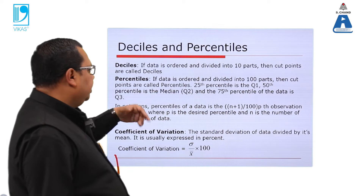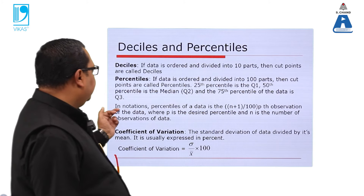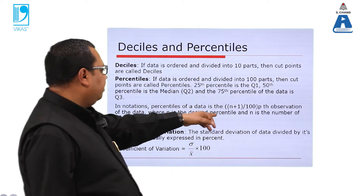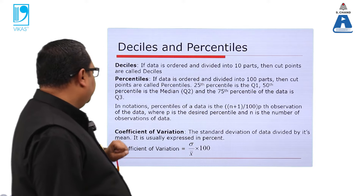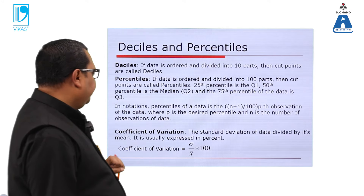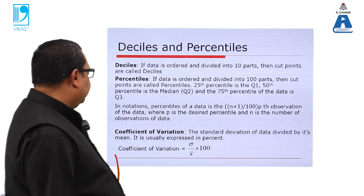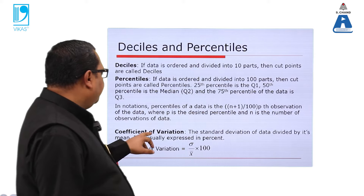The percentile formula uses P as the desired percentile and n as the number of observations in the data. Next we will study the coefficient of variation.